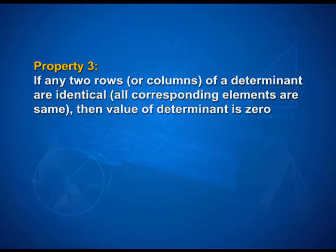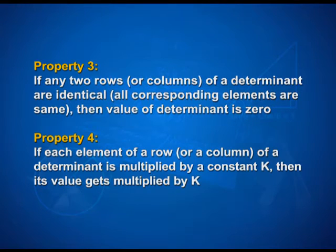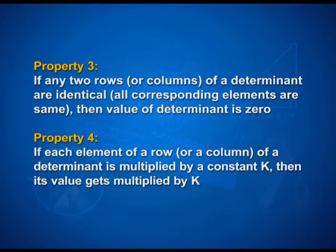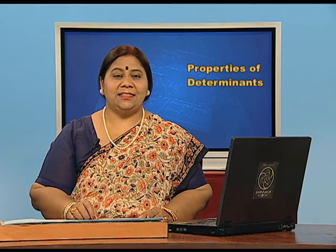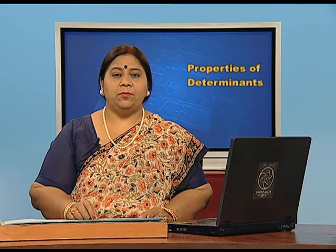Now students, look at the third property: if any two rows or columns of a determinant are identical, that is, all corresponding elements are the same, then the value of the determinant is 0. Property 4 says: if each element of a row or a column of a determinant is multiplied by a constant k, then its value gets multiplied by k. We will be using properties 3 and 4 for solving a determinant.